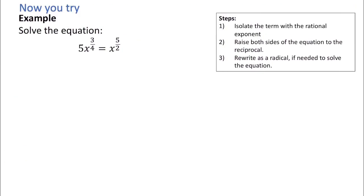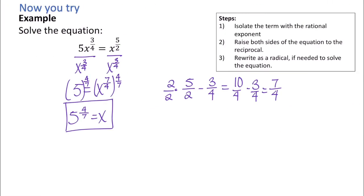Pause the video and try this similar example on your own. Our strategy is to use the quotient rule to subtract those exponents and combine those terms. We get x to the 5 over 2 divided by x to the 3 over 4, and when we subtract the exponents, we get 7 over 4. We can undo that exponent of 7 over 4 by raising both sides to the 4 over 7 power, which gives us 5 to the 4 over 7 equals x.